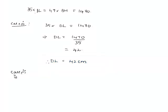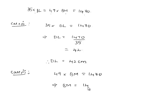For case 2, taking the second part of the equation: 49 × BM = 1470. That implies BM = 1470 ÷ 49. The value of 1470 ÷ 49 is 30. Therefore, BM = 30 cm.